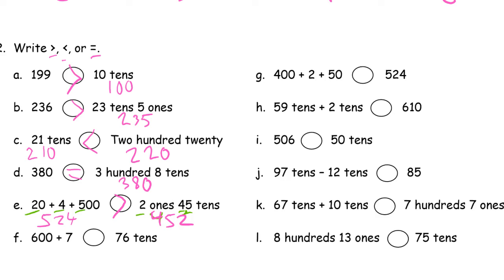Six hundred plus seven is six hundred seven. And seventy-six tens is seven hundred sixty — so six hundred seven is less than seven hundred sixty. Here we have four hundred fifty-two and five hundred twenty-four — four hundred fifty-two is less than five hundred twenty-four.